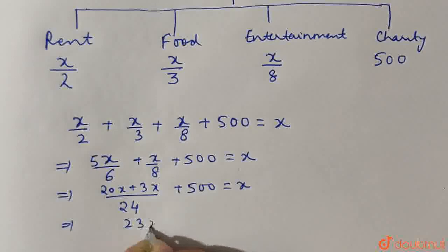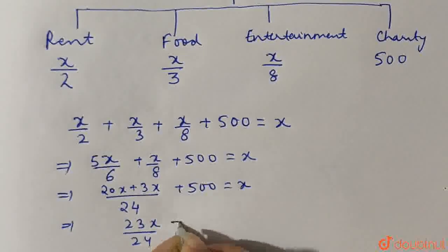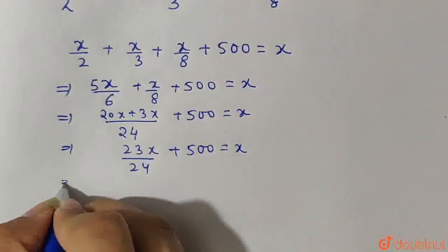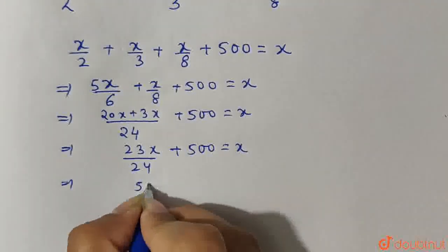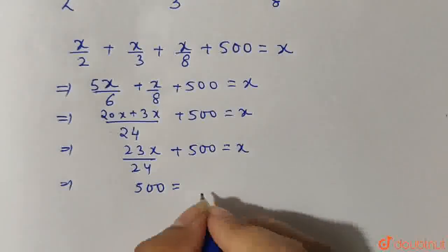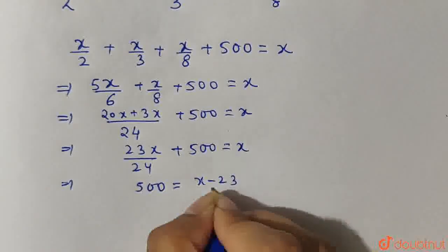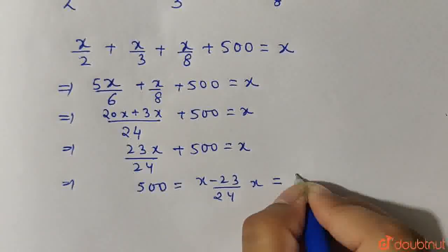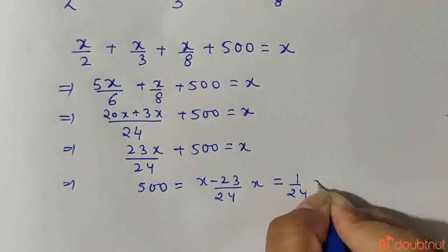23X by 24 plus 500 gives us X. So simplifying, 500 is equal to X minus 23 by 24 X, which on simplification gives 1 by 24 X.